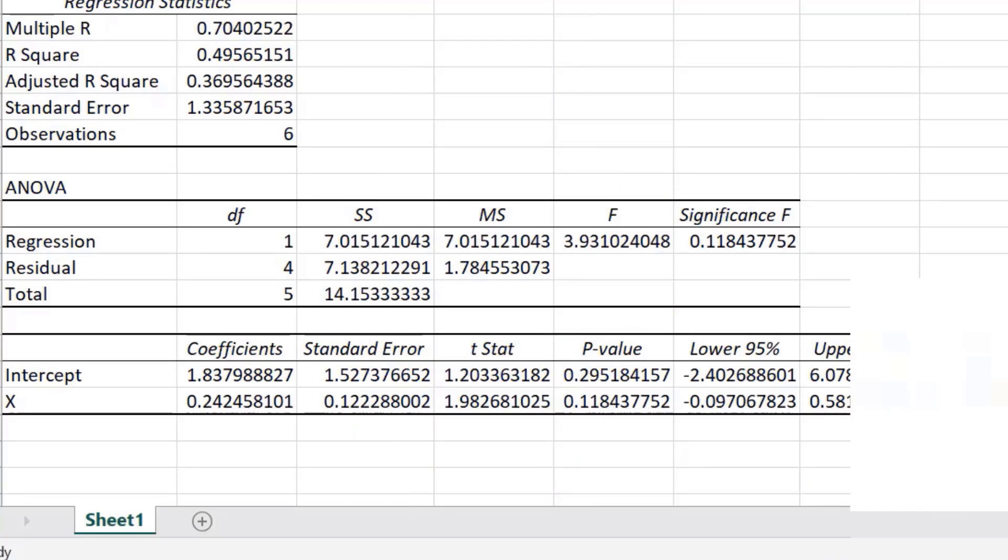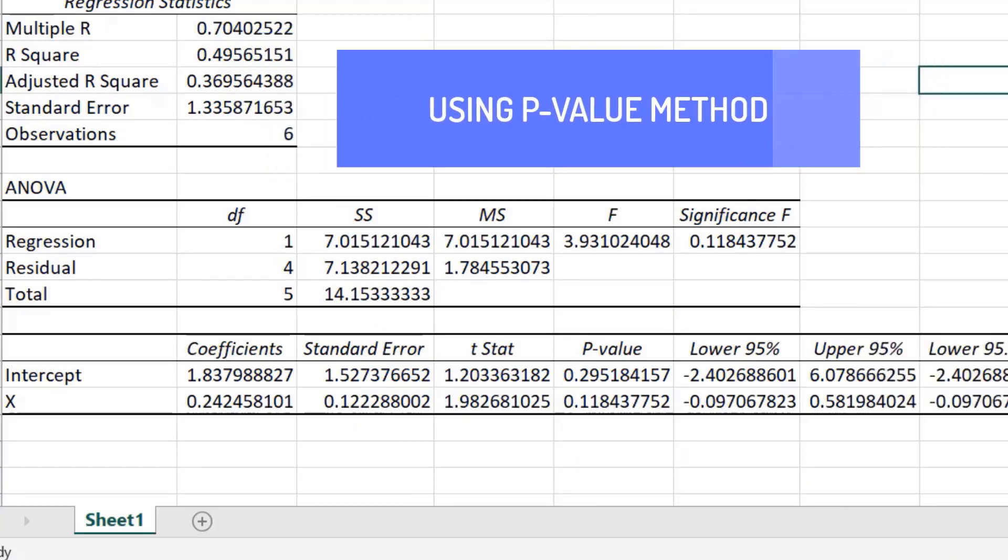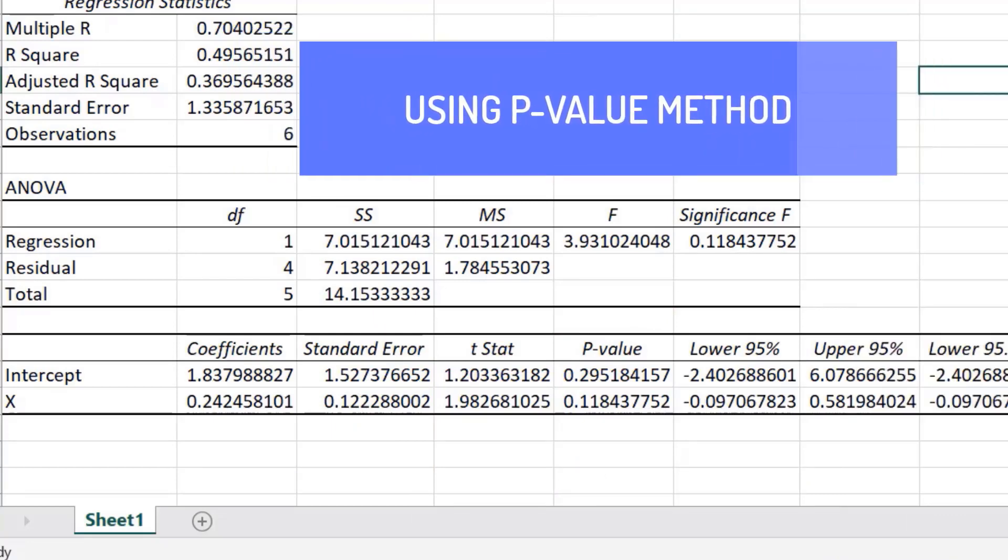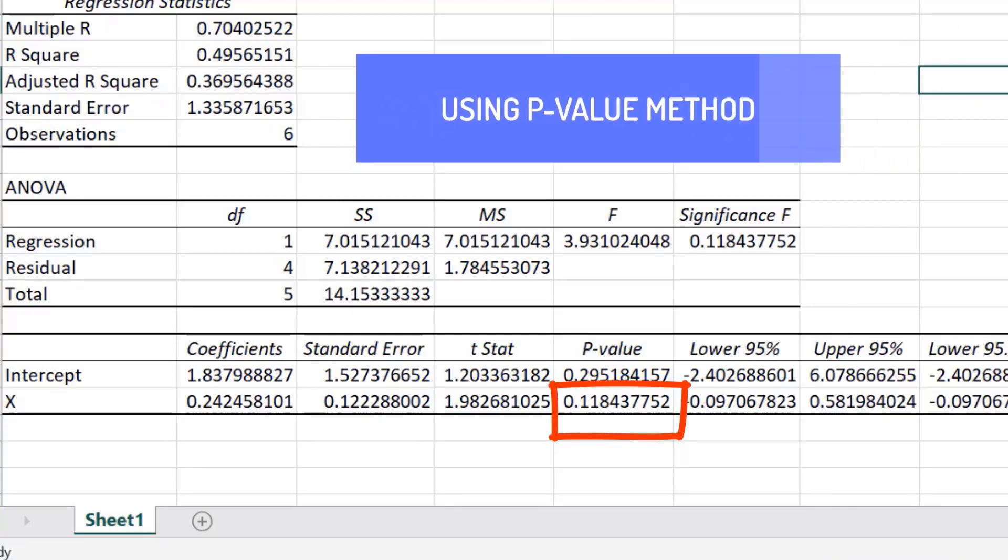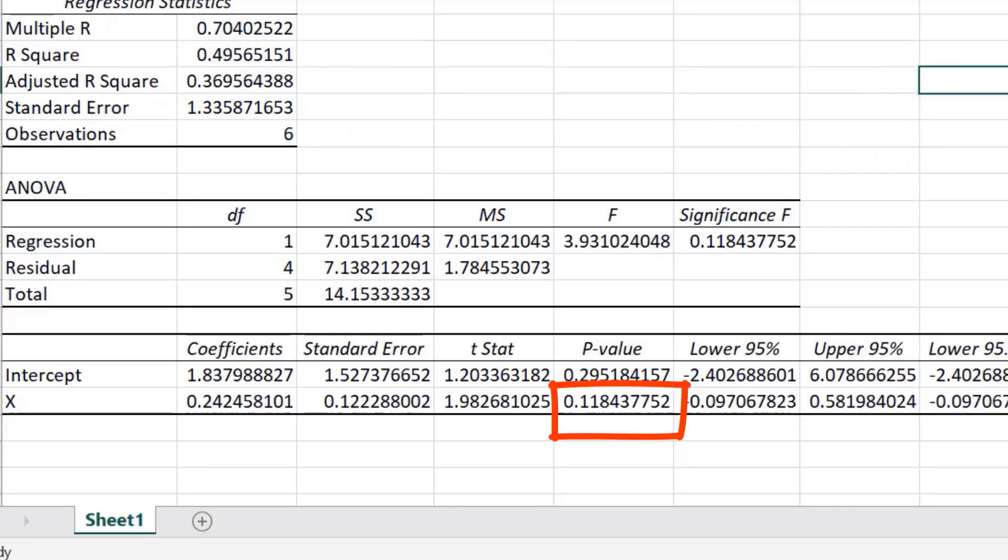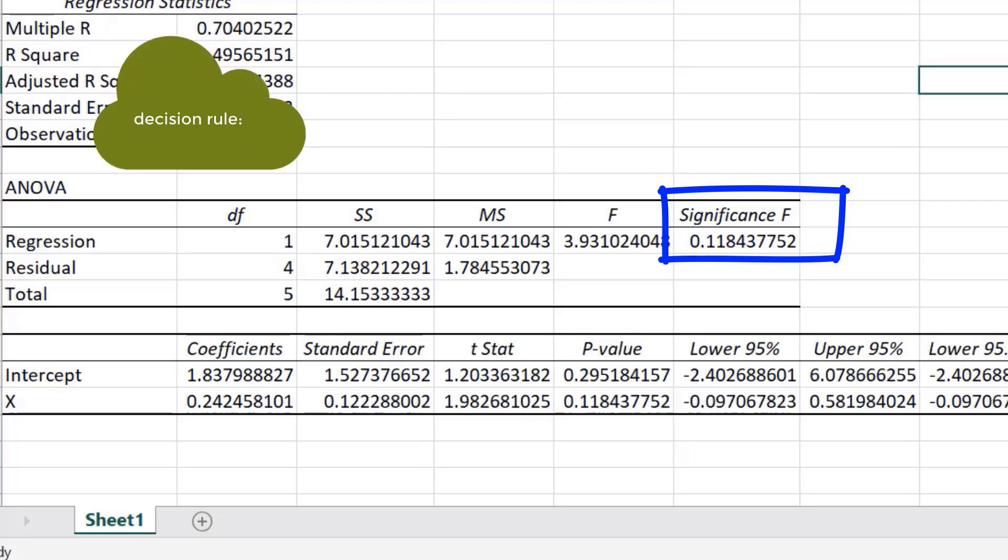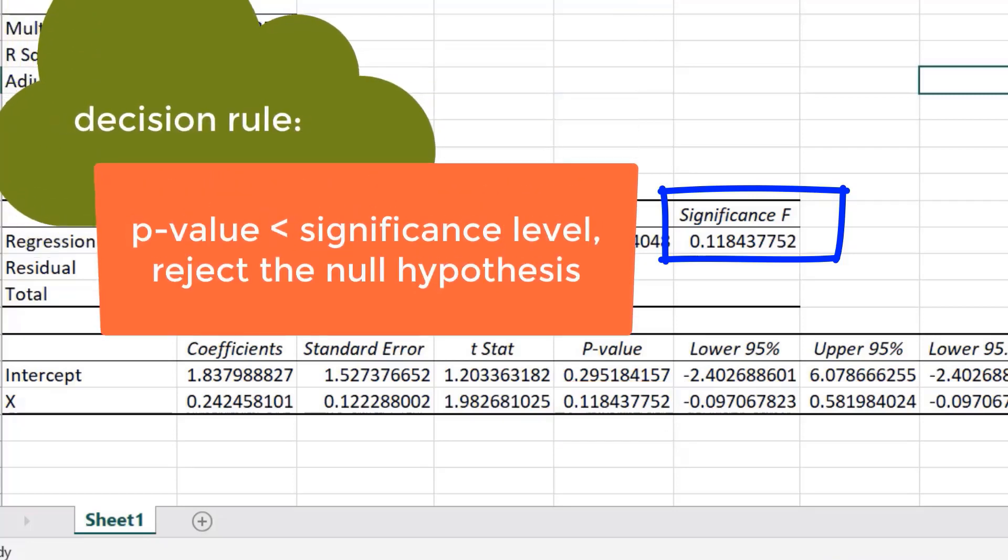The second method is the use of p-value. The data analysis shows a p-value of 0.1184, the same amount as Significance F. The decision rule is that p-value should be less than the significance level to reject the null hypothesis.